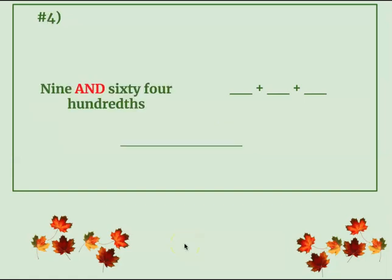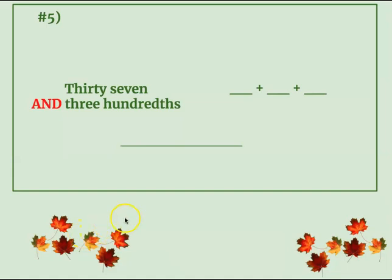This one is a little bit different — nine and sixty-four hundredths. I gave it to you in word form. Can you write it in standard form? Remember, that's just how we write the number. And then can you write it in expanded form? Nine and sixty-four hundredths — if you can write it in standard form first, that'll help you when you drop down the numbers. Number five: thirty-seven and three hundredths. Just three in the hundredths. Write it in standard form and then write it in expanded form.